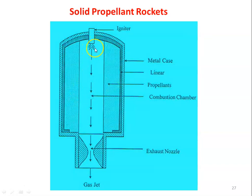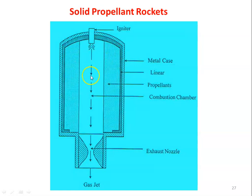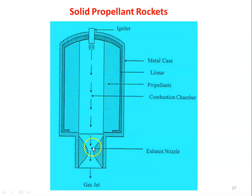Using an electrical spark, we initiate combustion. The combustion of the propellant takes place in the area called the combustion chamber at the center of the cylindrical rocket. The solid propellant is consumed — the fuel and oxidizer are consumed by the flame, hot gases are produced, and the hot gases are expanded through the convergent-divergent nozzle. The gas jet produces thrust, and using the thrust, the entire rocket moves in the opposite direction.